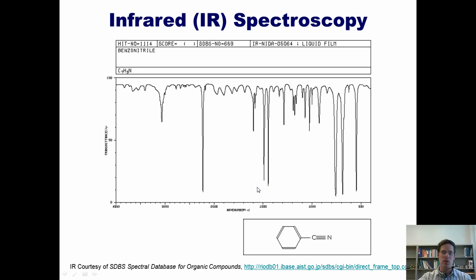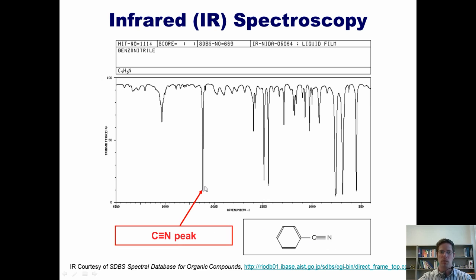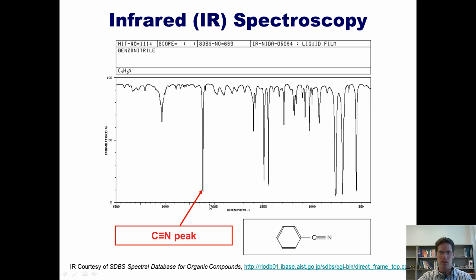The last functional group I want to show you is a nitrile. This compound is benzonitrile, with a C triple bond N. It shows up right here at 2200. This is one of the few things that shows up between 3000 and 1700 in the IR spectrum — right around 2200, give or take a little bit on either side.